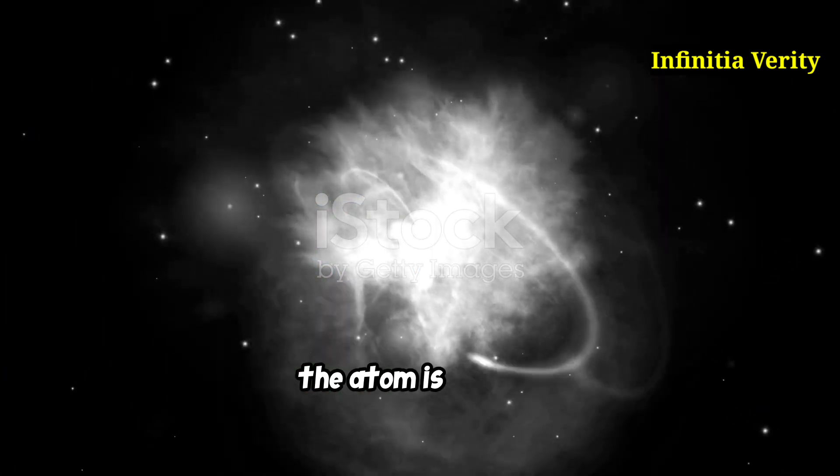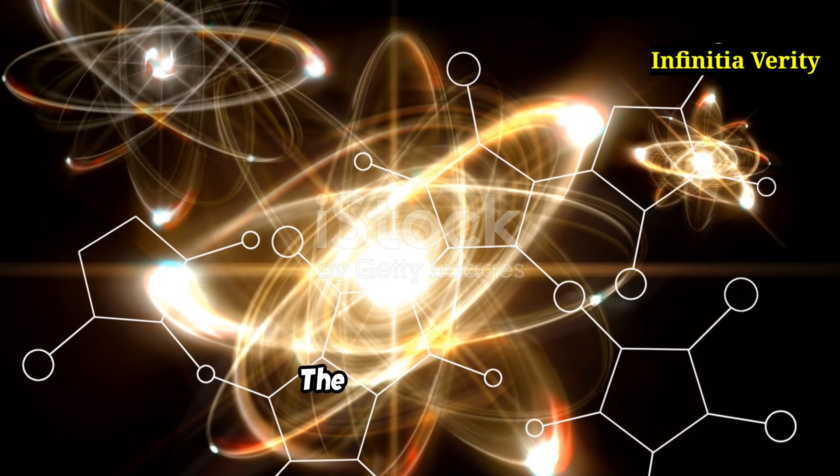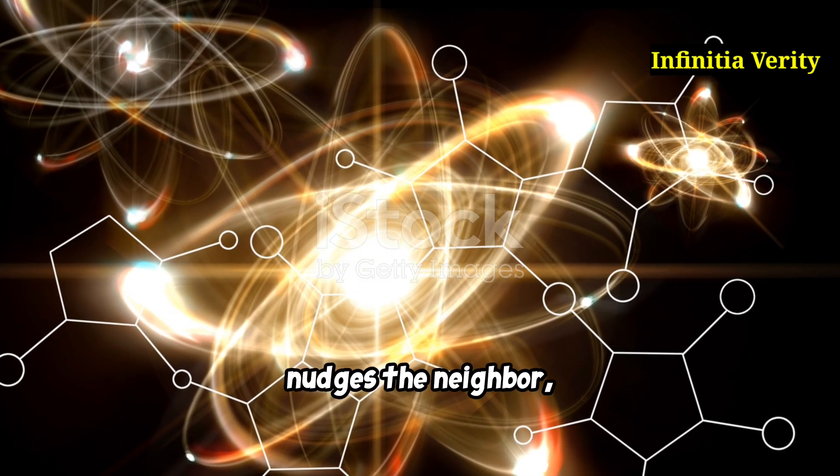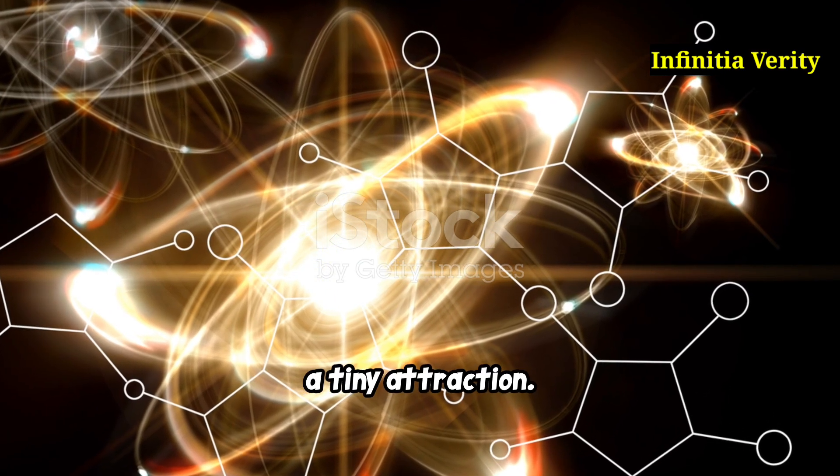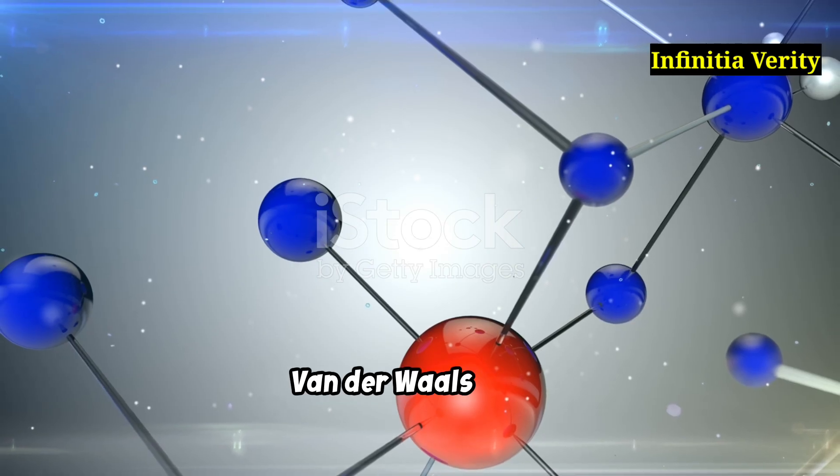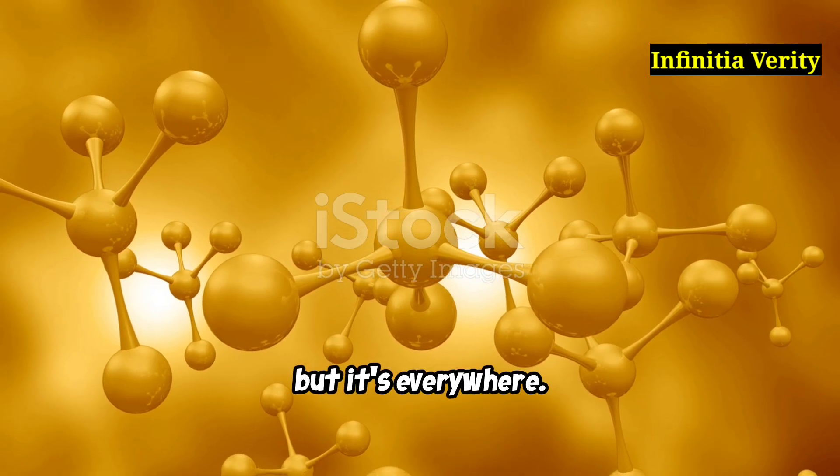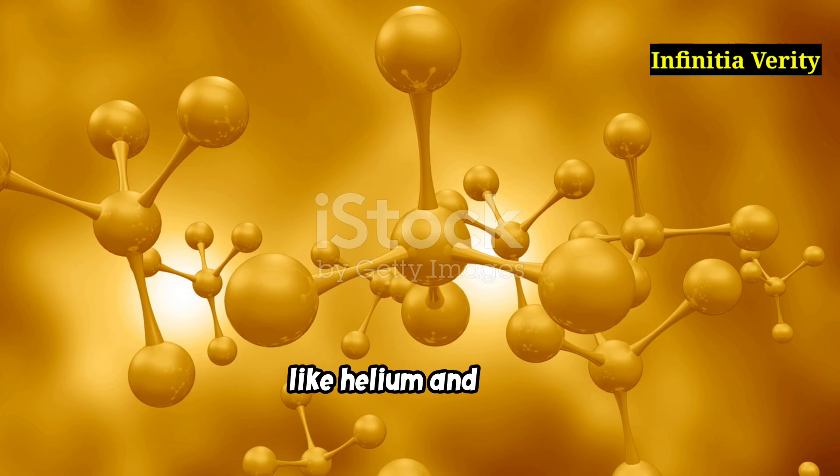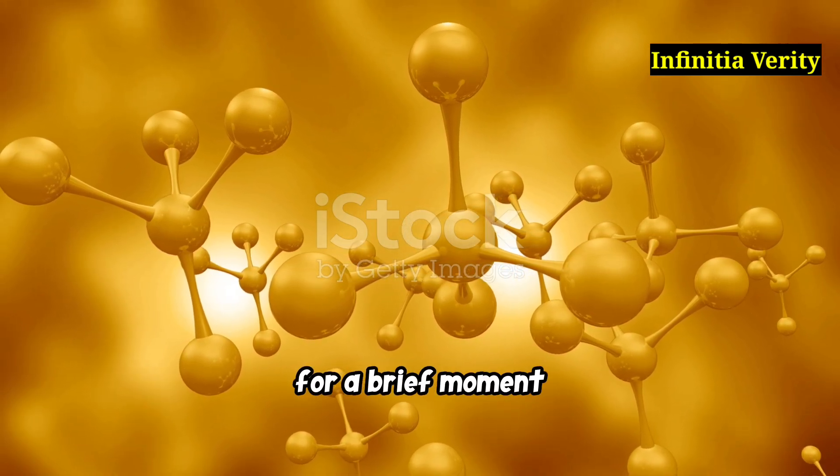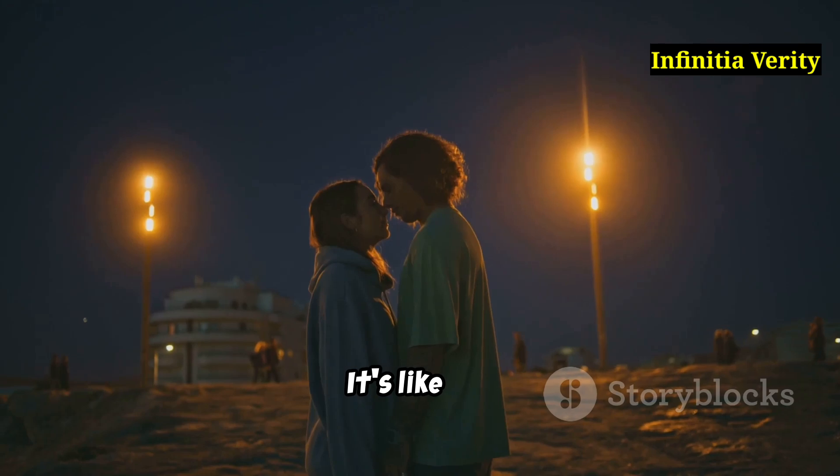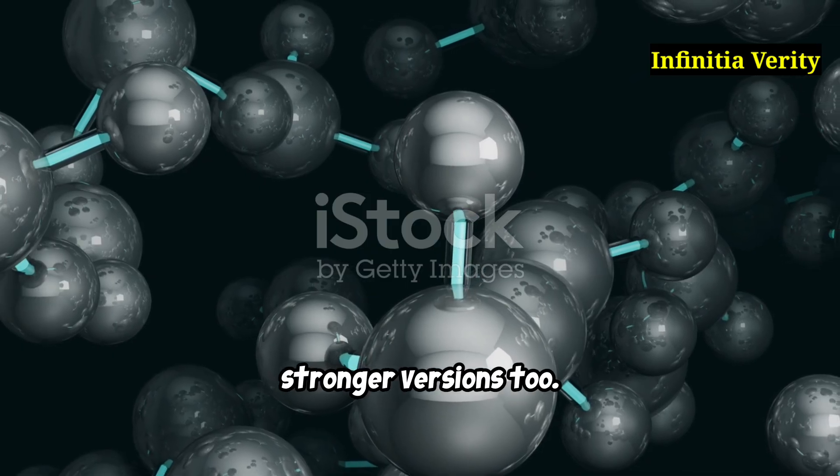Now imagine this uneven atom comes close to another atom. The tiny imbalance nudges the neighbor, making it lean too. Suddenly, the two atoms feel a tiny attraction. That's one form of van der Waals force called London dispersion forces. It's the weakest kind, but it's everywhere. Even noble gases like helium and neon, which usually don't mix with anyone, can stick together for a brief moment thanks to this. It's like the quietest romance in high school - blink and you'll miss it.